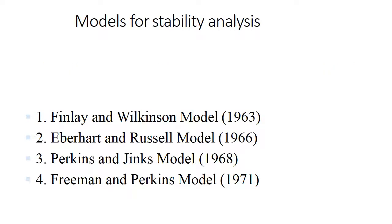Models of stability analysis — there are four important models. First is Finley and Wilkins, proposed in 1963. Second is Eberhardt and Russell's model, 1966. Third is Perkins and Jinks model, 1968. And fourth is Freeman and Perkins model, 1961. Among these four, Eberhardt and Russell's model was mostly discussed and utilized in field experiments. Whereas Freeman and Perkins model is the most effective and efficient model but is moderately used because of its complications.